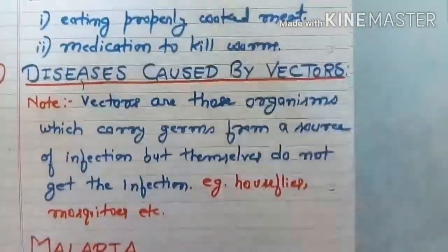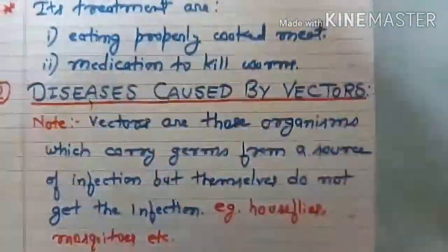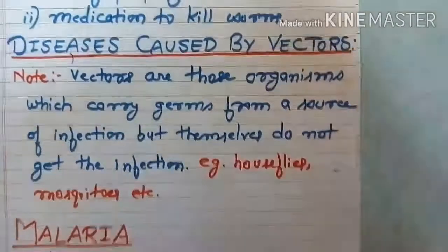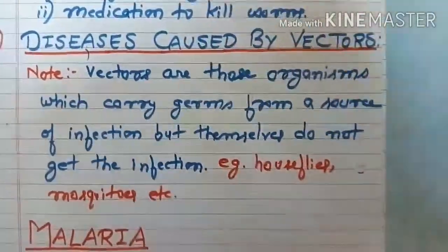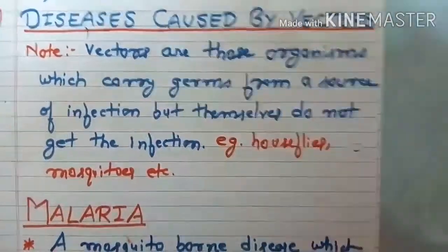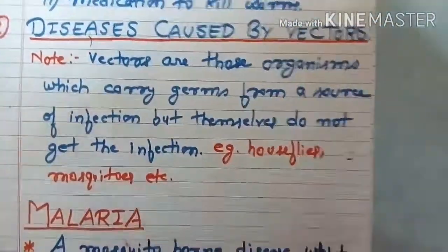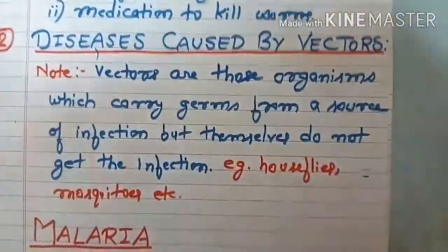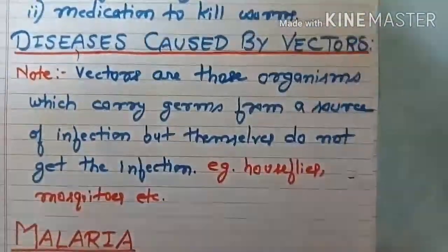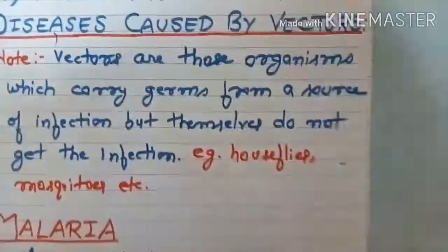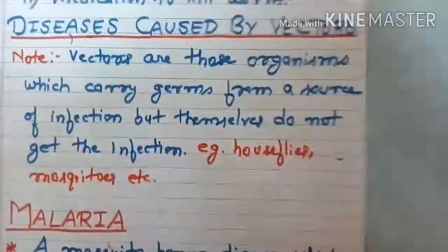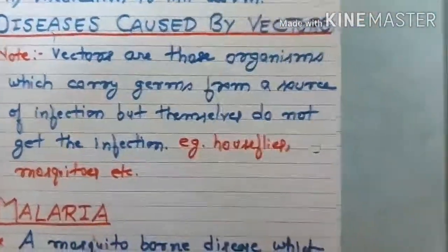Now we will see diseases caused by vectors. Vectors are organisms which carry germs from a source of infection but themselves do not get the infection. Examples are house flies and mosquitoes. They sit on garbage and contaminated water — which are sources of infection — carry the germs, but do not get infected themselves.